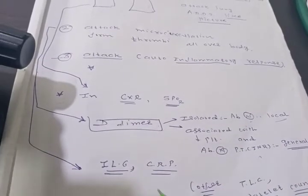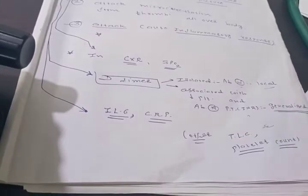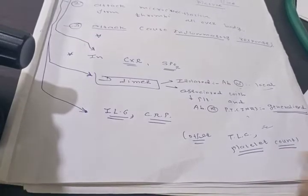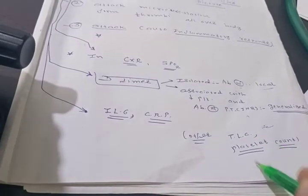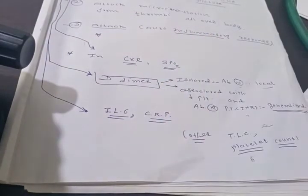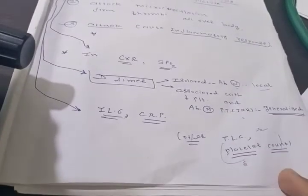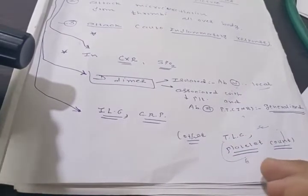Third is interleukin-6 and the CRP ratio, suggestive of inflammation. Along with this, routine reports like total leukocyte count for infection. If more than 18,000 or 20,000, we can say there is a superimposed bacterial infection. Low platelet count is suggestive of generalized fibrinolytic activity or maybe side effects of some drugs. So routine investigation, platelet count and total leukocyte count we are doing every 48 hourly or 72 hourly to check for the response.